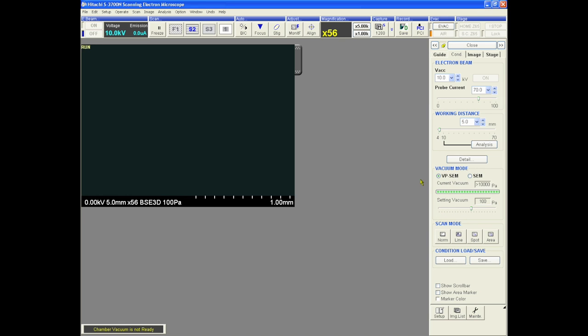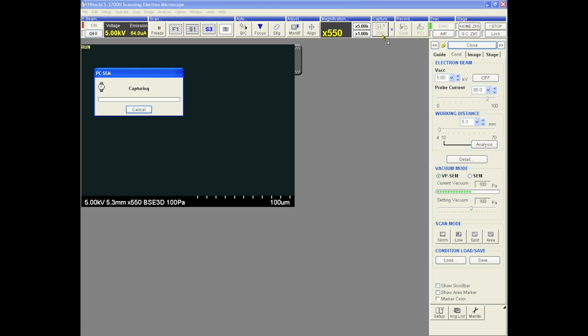Once the chamber is pumped down to the appropriate vacuum level, click the high voltage button to apply voltage and begin viewing your sample. If no current is displayed when a voltage is applied, the filament is burned out and will need to be replaced. Please contact the trainer so the proper steps can be taken.